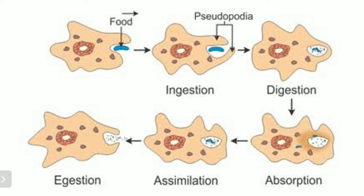The process of obtaining food by amoeba is called phagocytosis. You have to remember 3 important things: first, amoeba eats tiny plants and animals as food; second, the mode of nutrition in amoeba is holozoic; and third, the process of obtaining food by amoeba is called phagocytosis.